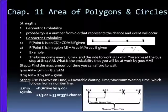Here's an example I've worked out. The buses come every 15 minutes and the ride to work is 31 minutes. You arrive at the bus stop at 8:24 AM. What is the probability that you'll be at work by 9 o'clock AM?